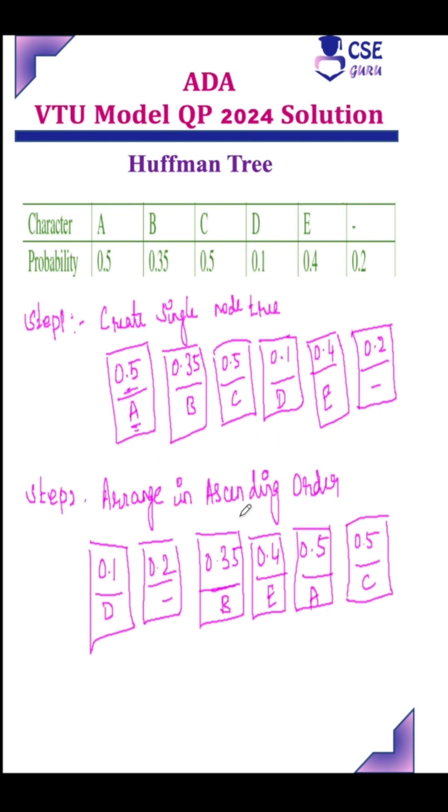Step 2: Arrange the single node trees in ascending order according to the probability value. 0.1 with D comes first, 0.2 with E comes next. Likewise, arrange in ascending order.